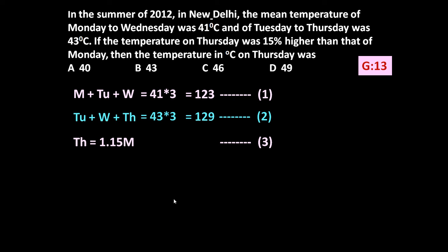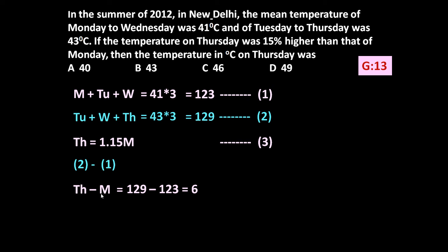To solve this, let us take equation two minus equation one. Wednesday and Tuesday cancel out on both sides, leaving Thursday minus Monday equals 129 minus 123, which is 6. So Thursday's temperature minus Monday's temperature equals 6 degree Celsius.